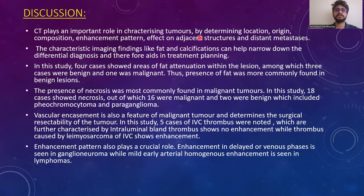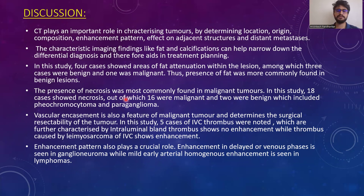In discussion, CT plays an important role in characterizing tumors by determining location, origin, composition, enhancement pattern, effect on adjacent structures, and distant metastasis. Characteristic imaging findings like fat and calcifications help narrow the diagnosis and guide treatment planning. In this study, four cases showed fat attenuation, three of which were benign and one malignant. Necrosis was found in 18 cases — 16 malignant and two benign (pheochromocytoma and paraganglioma). Five cases of IVC thrombus were noted; bland thrombus showed no enhancement while tumor thrombus caused by leiomyosarcoma showed enhancement. Vascular encasement is a feature of malignancy and determines surgical resectability.